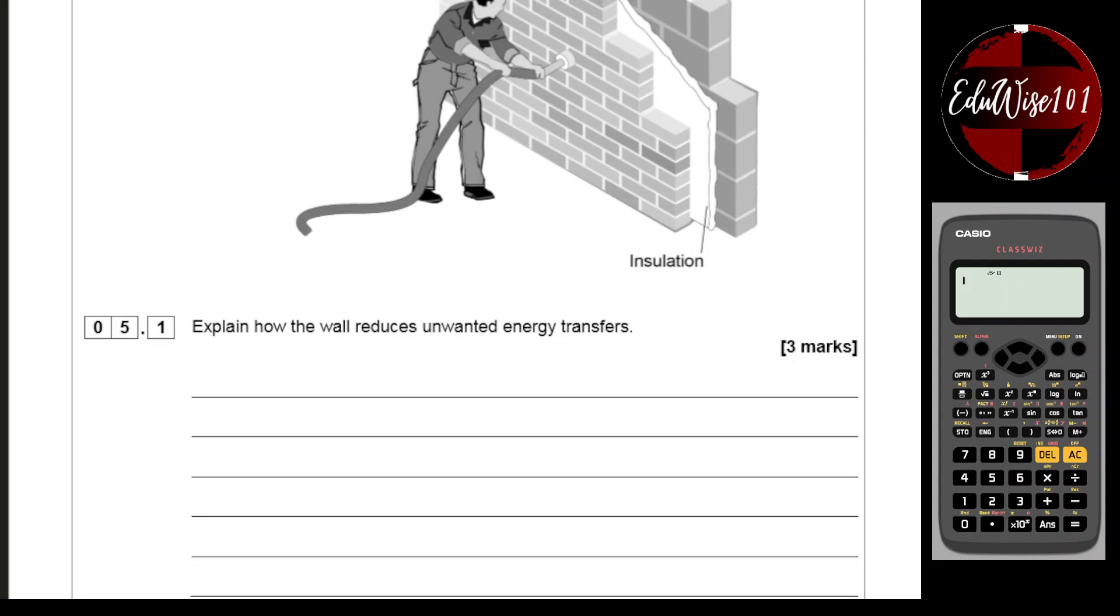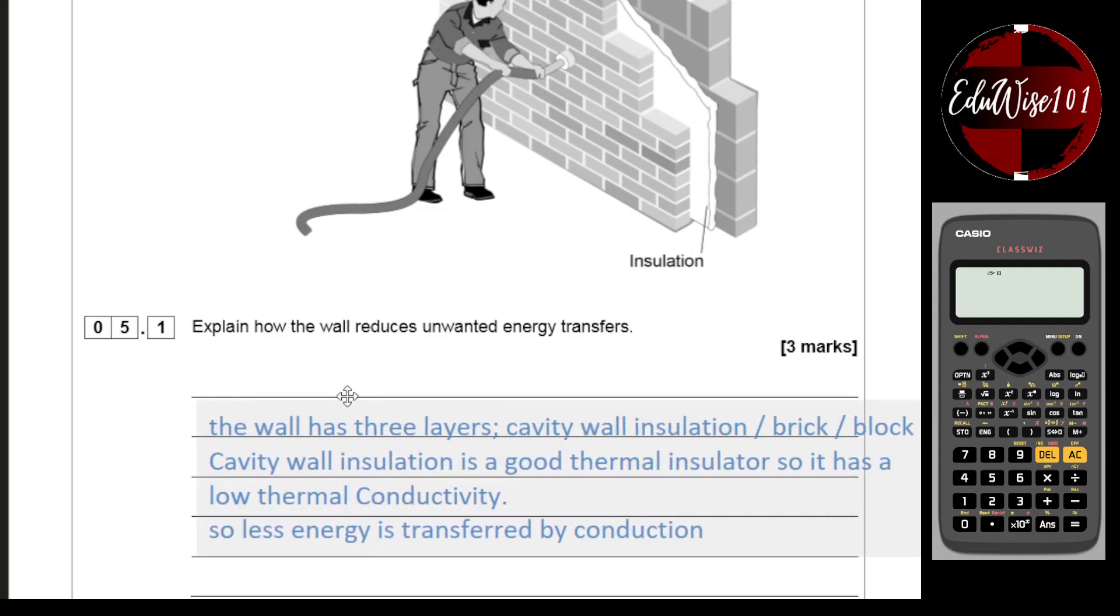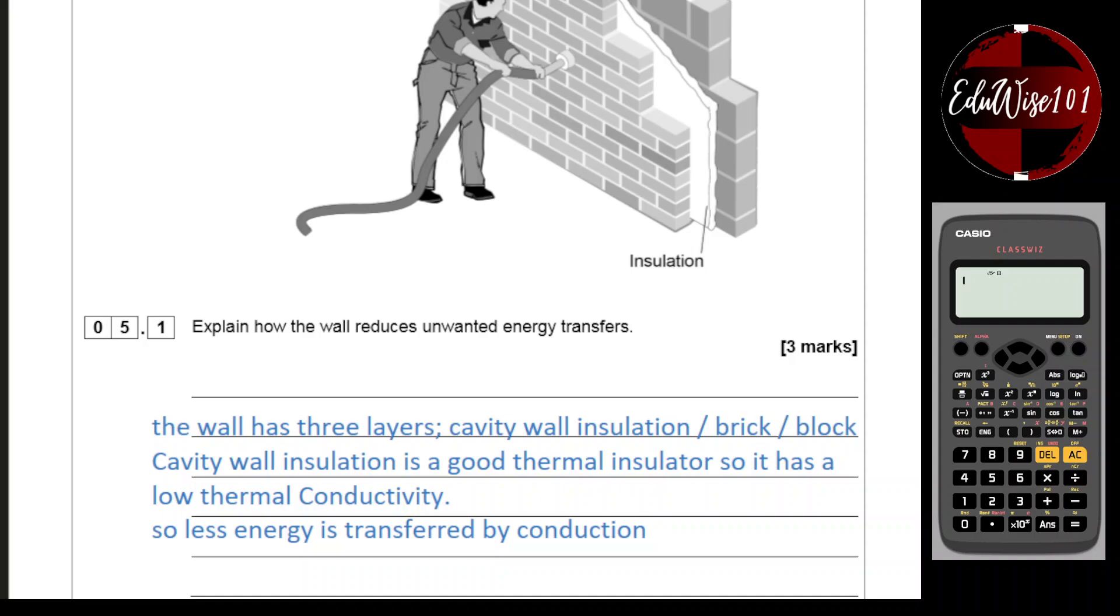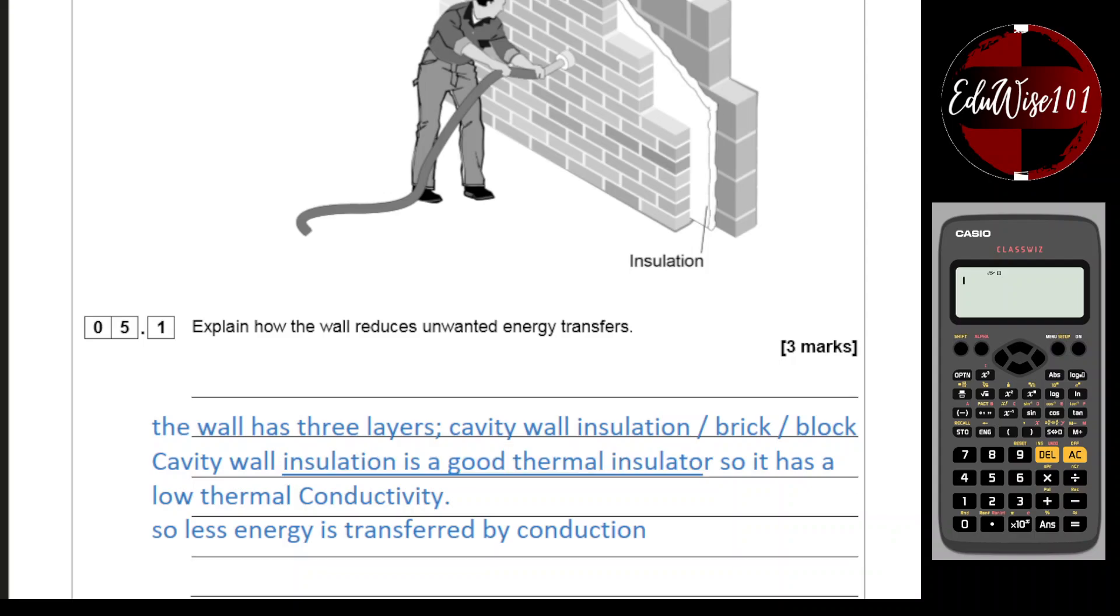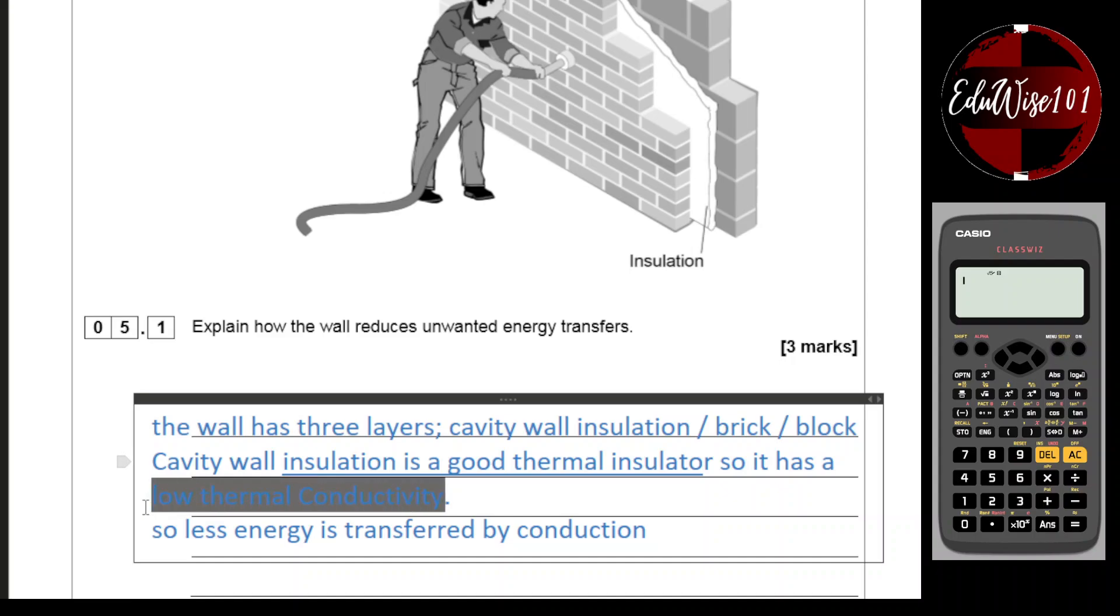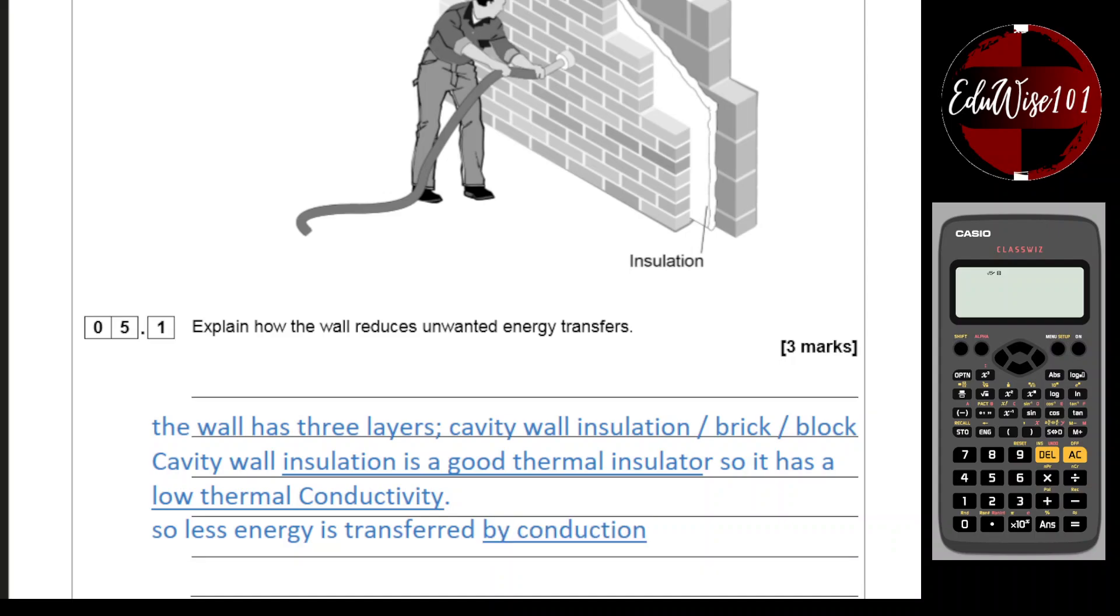So how do you write the answer? Here's a sample answer. The wall has three layers: cavity wall insulation, the brick and the block wall. Cavity wall insulation is a good thermal insulator. That is key. So it has a low thermal conductivity. That is also key. So less energy is transferred by conduction. That gives you the three marks for that question.